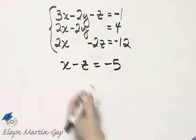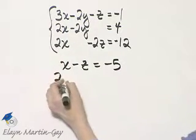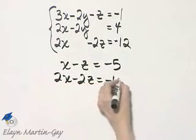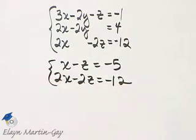That comes from equations one and two, and then I'll write down two x minus two z is equal to negative twelve. I'll concentrate on these two equations.